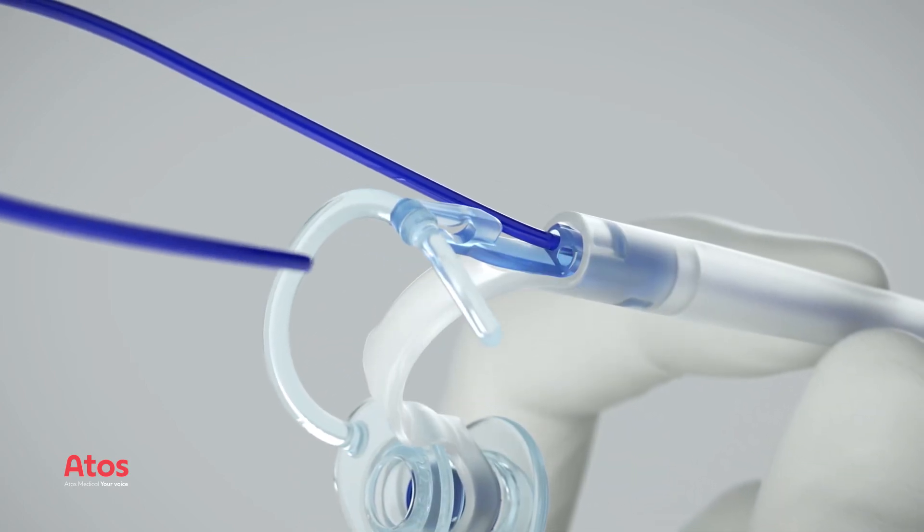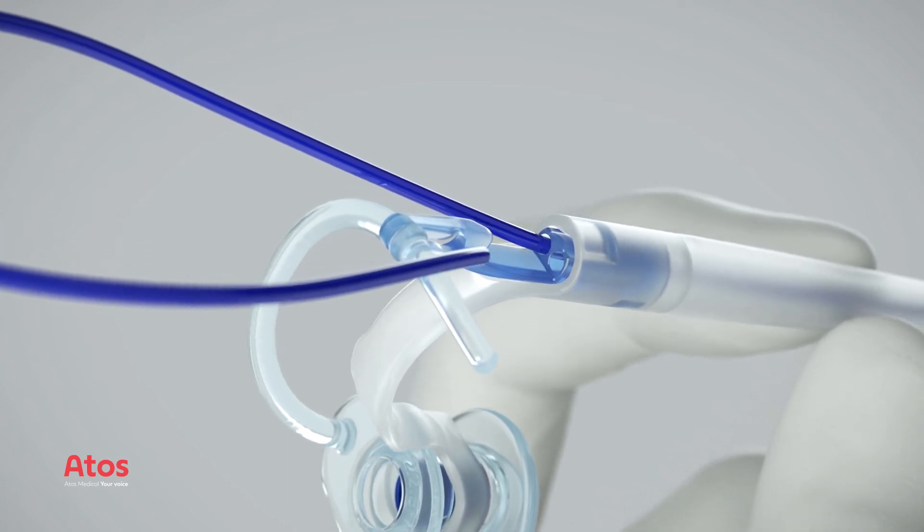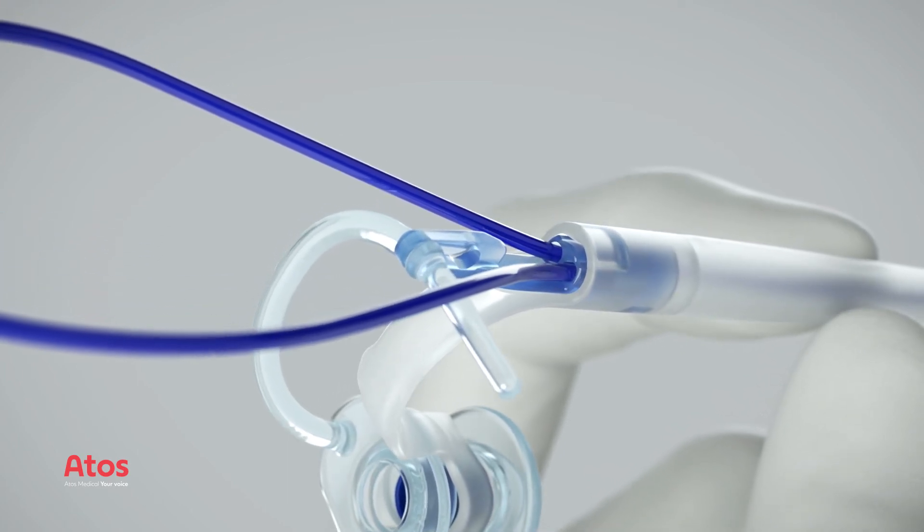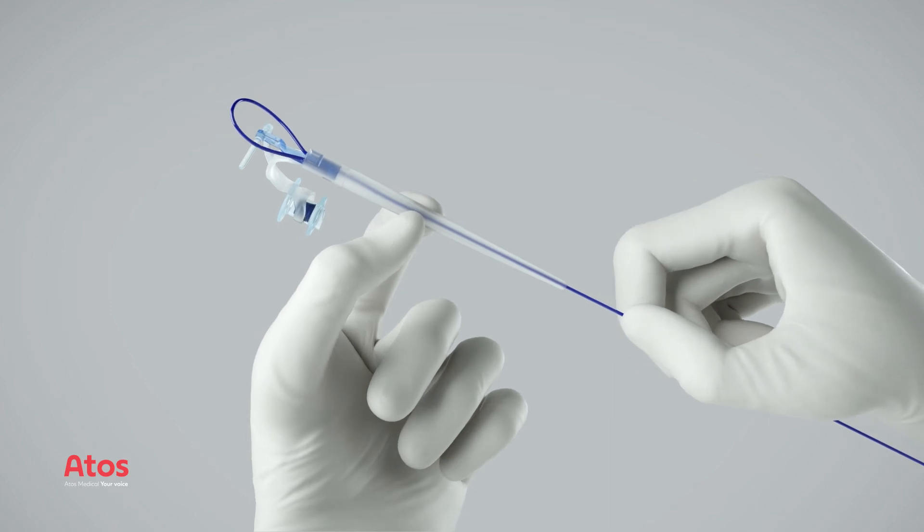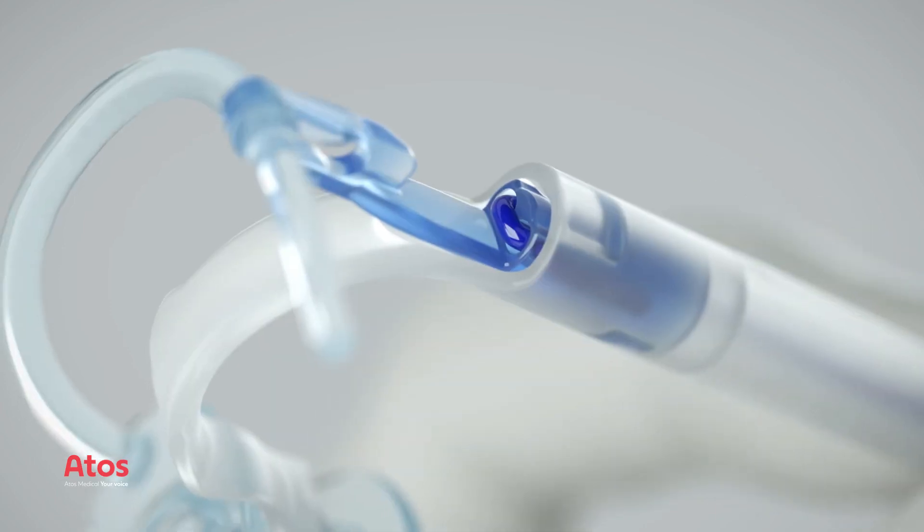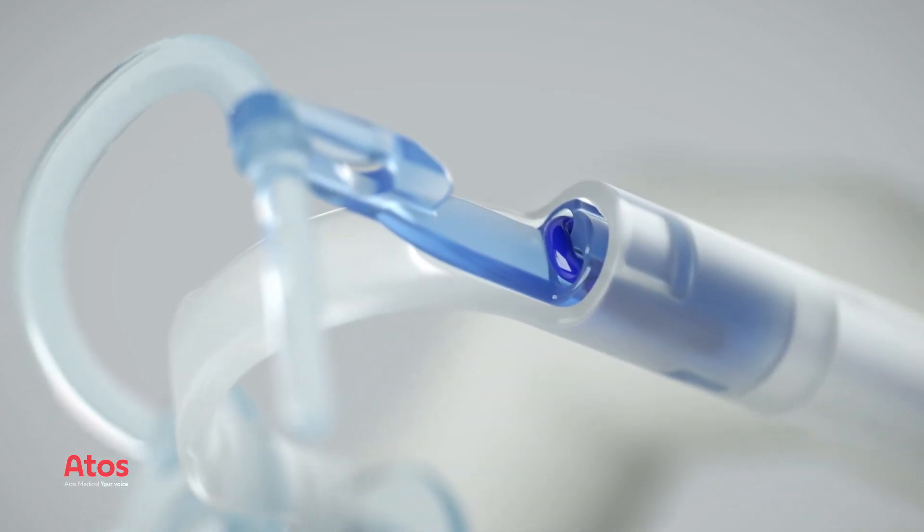Grab the tip of the guide wire and insert it into the hole next to the exit hole of the puncture dilator. Tighten the guide wire and verify that it is secured to the puncture dilator.